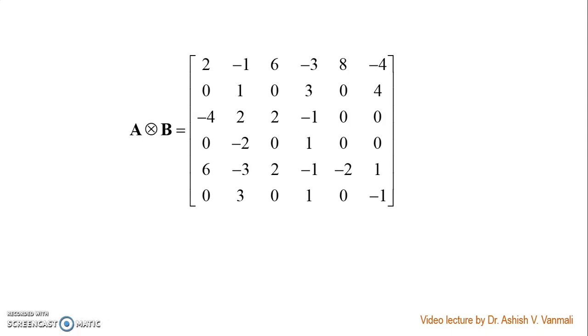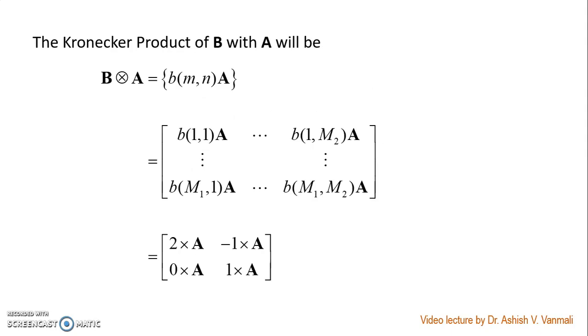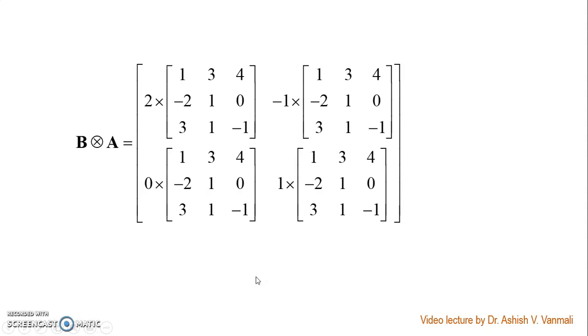Now, we will repeat the same process when we want to find the Kronecker product of B with A. I will be multiplying each element of matrix B with matrix A. If we substitute the values of matrix B, I will get this as 2 into matrix A, minus 1 into matrix A, 0 into matrix A, and 1 into matrix A. If we substitute the value of A, we will get these terms.